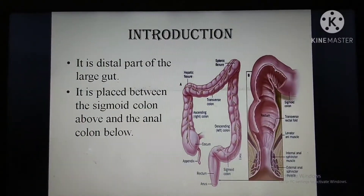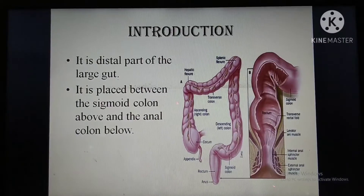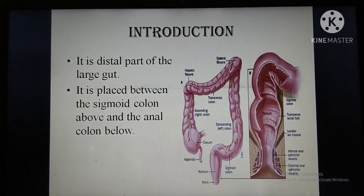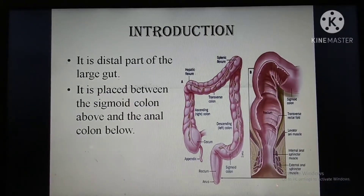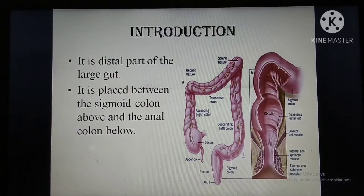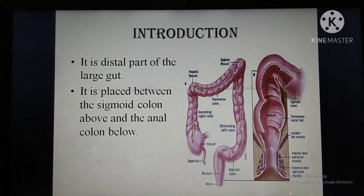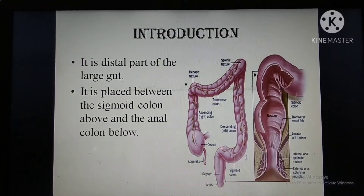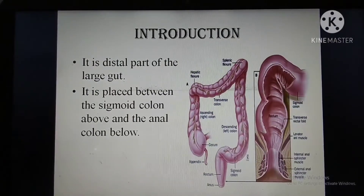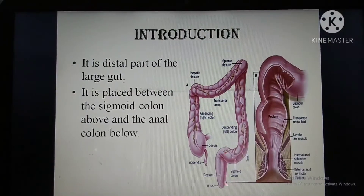The rectum is a distal part of the large gut. On the right side you can see the large gut — there is the cecum, appendix, ascending colon, hepatic flexure, transverse colon, splenic flexure, descending colon, sigmoid colon, and then the rectum and anal canal. It is placed between the sigmoid colon above and the anal canal below.